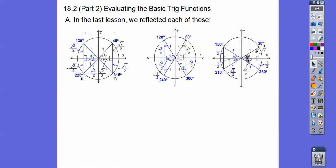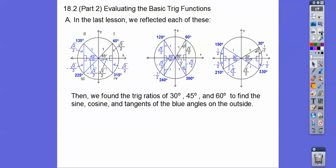We put the 30 over there and reflected it three times. That gave us the 30-degree angle, and it's 30 off the 180, so 150. 30 off the 180, so 210. 30 off the 360, so 300. That let us find the trig ratios of the 30, 45, and 60s — to find the sine, cosines, and tangents of these angles on the outside. So if I wanted to find the sine of 150, I'd just find the sine of 30, which is 1/2.